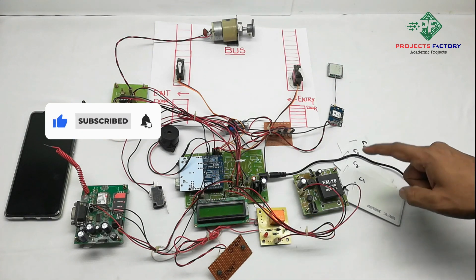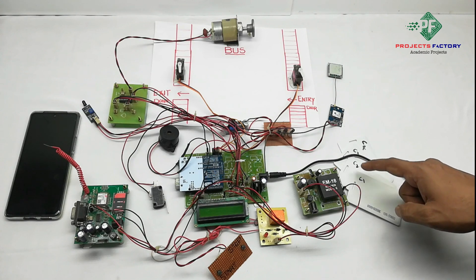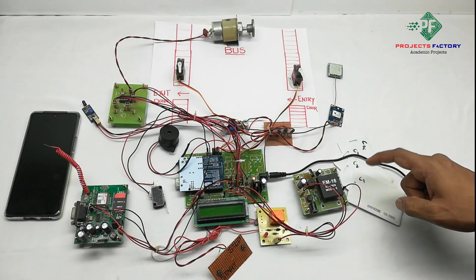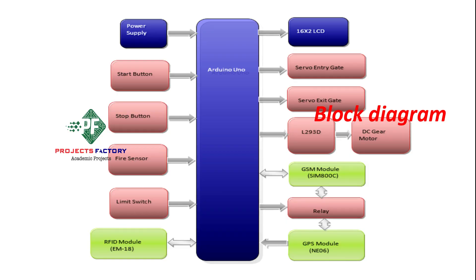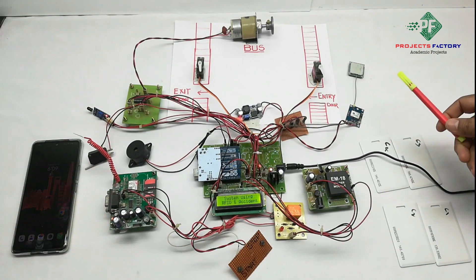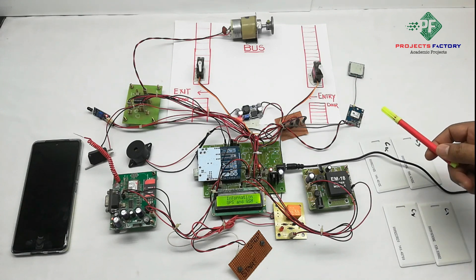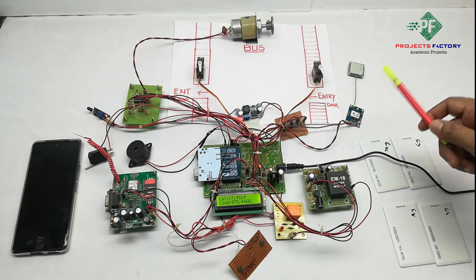There are four passengers, each with an RFID smart card loaded with a 500 rupees balance. Now we power on the project. After powering on, we have to wait for a GPS signal. If you are not getting the GPS signal, you need to keep the project outside to acquire the signal.